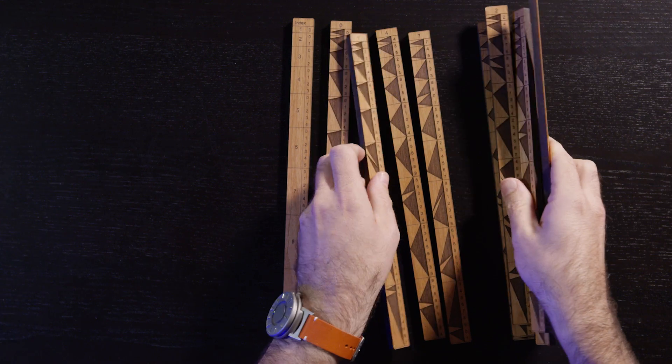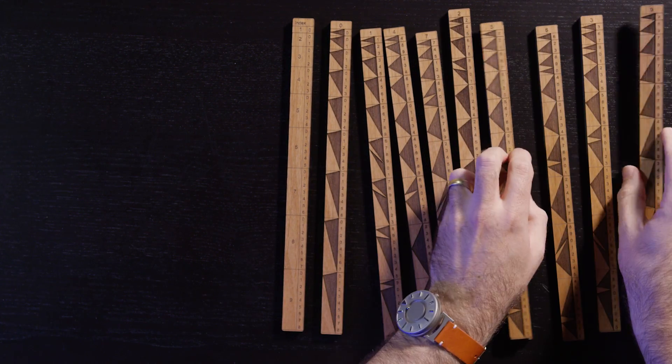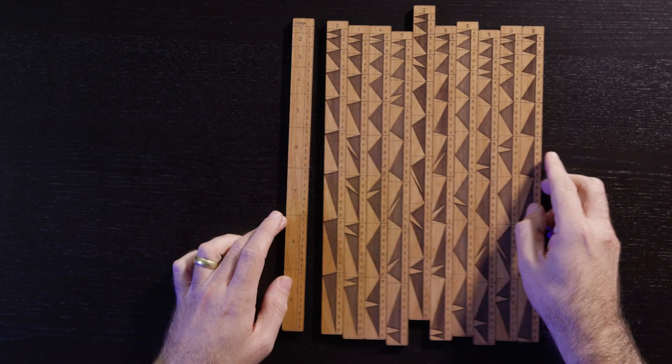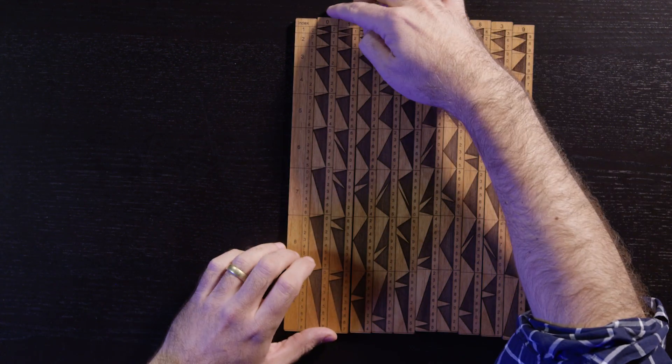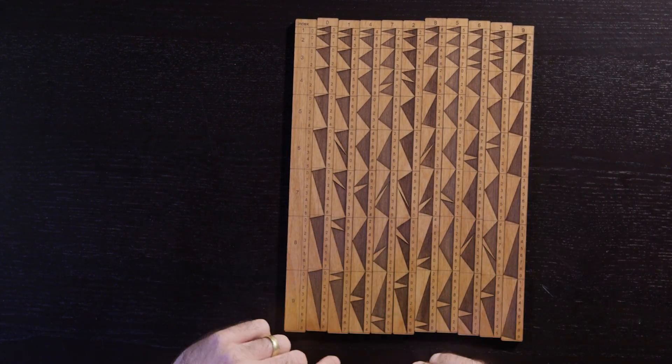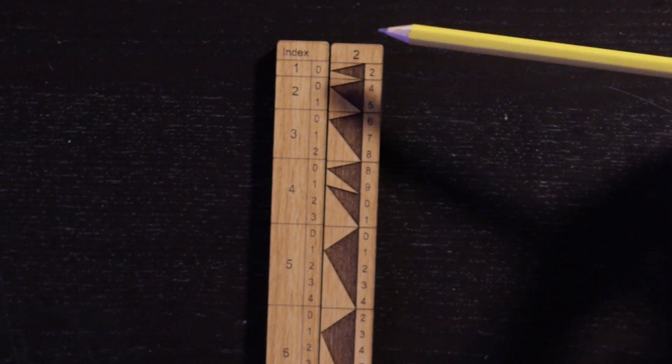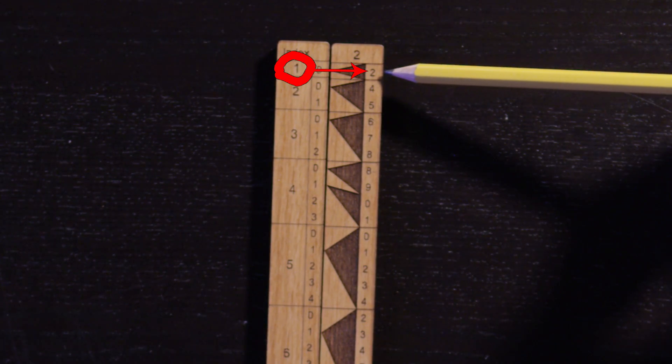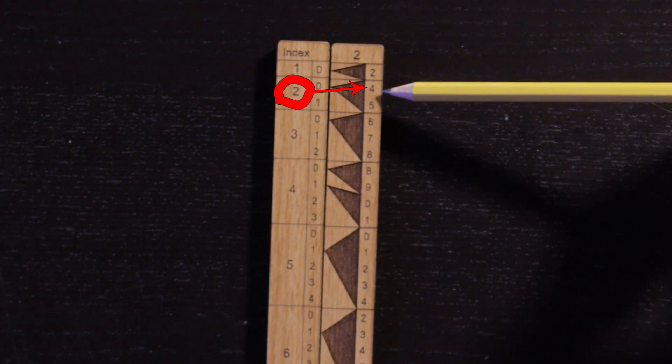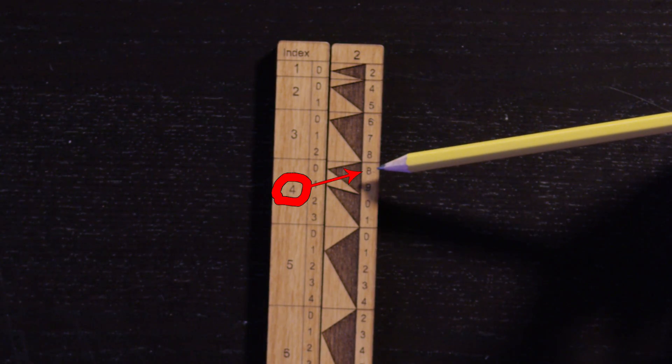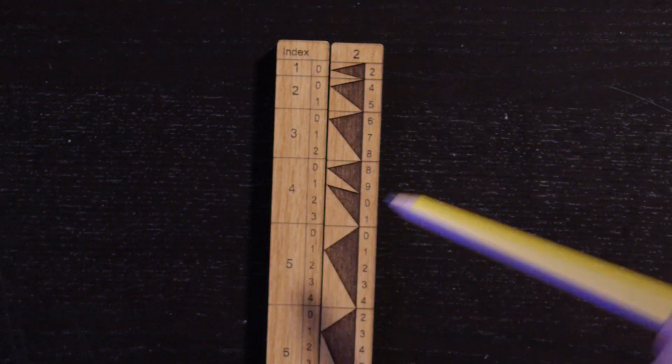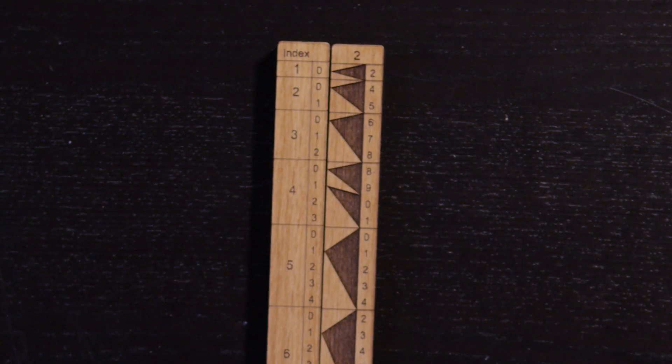Now, each of these rulers has a number at the top, a digit 0 through 9, and these can be used to multiply numbers together. I'll show you how this works. Let's start out really simple with just the 2 ruler. As you can see, 2 times 1 is 2, 2 times 2 is 4, 2 times 3 is 6, 2 times 4 is 8. We always look at the right-most top number in each row for the answer.